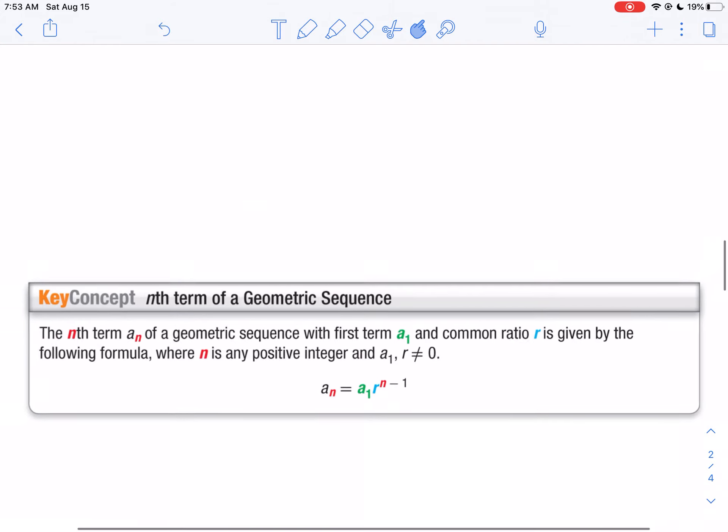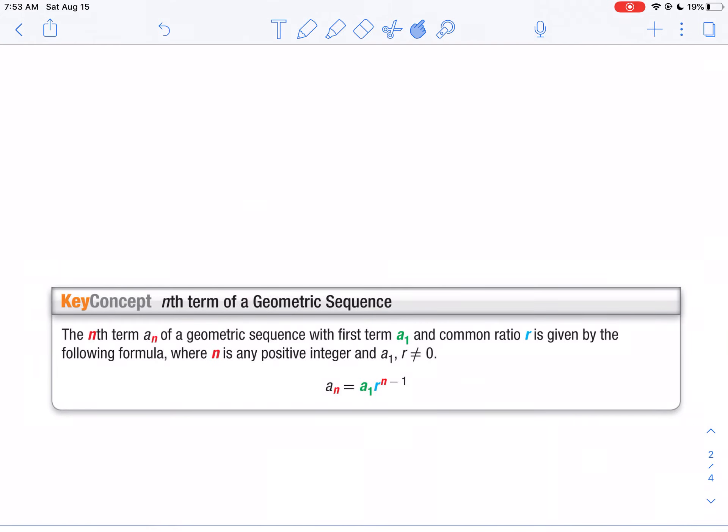Now, we can write a geometric sequence in explicit form. To write the function in explicit form, we're going to say a sub n, the nth term of your sequence, equals your first term times your common ratio raised to the n minus one power.